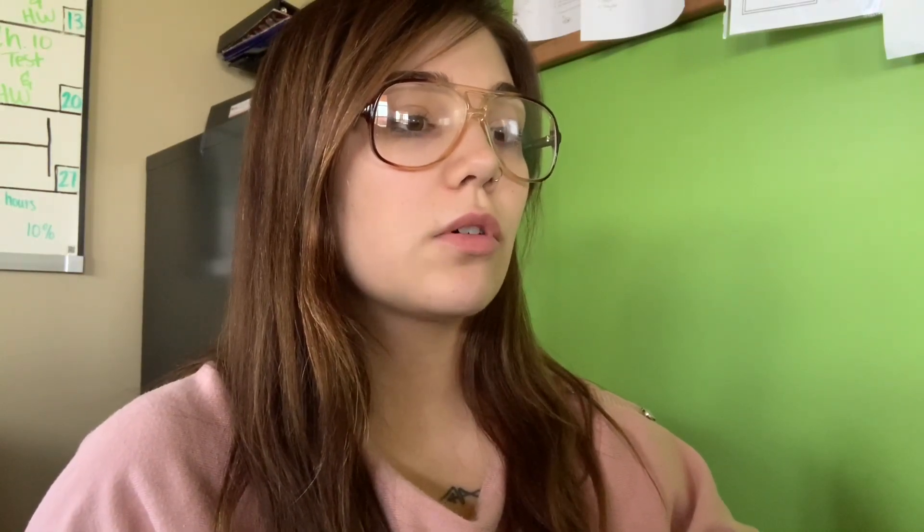An atom is the basic unit of matter with a nucleus at the center surrounded by negatively charged electrons that move around the nucleus in orbits. The nucleus consists of protons and neutrons, and the number of protons determines the element. Atoms cannot be divided into simpler substances by ordinary chemical means.